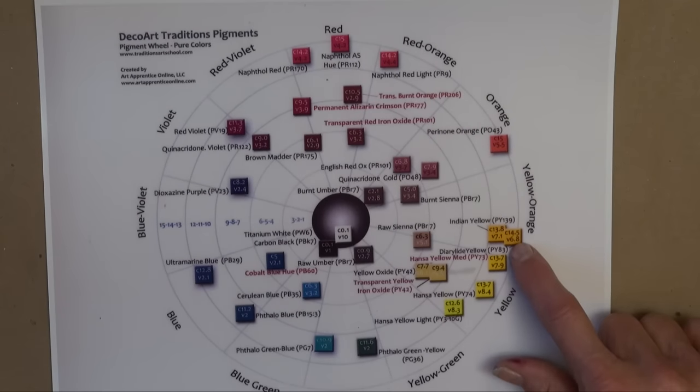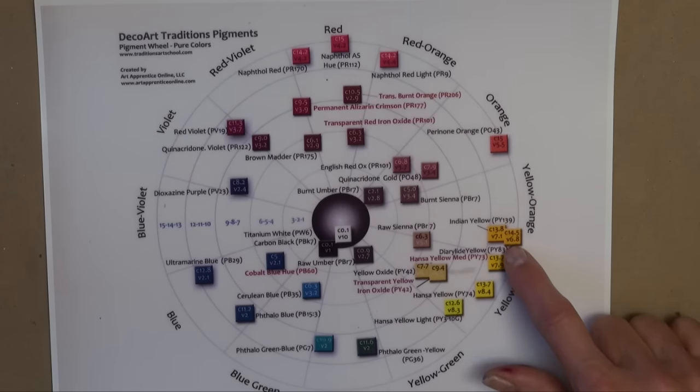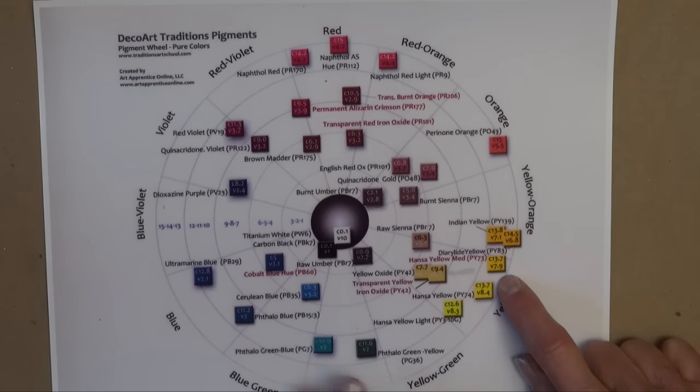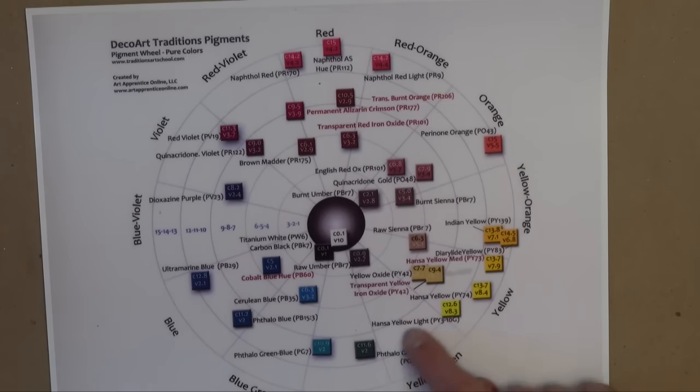Then you come down to the yellows. You can see this variety of pure pigment yellows. This hansa yellow is the warmest yellow. As we go down towards the blue, the colors get a little cooler. If I wanted to pick a cool yellow instead of a warm yellow, I would go with this Hansi Yellow Light, which is the closest yellow to the green.